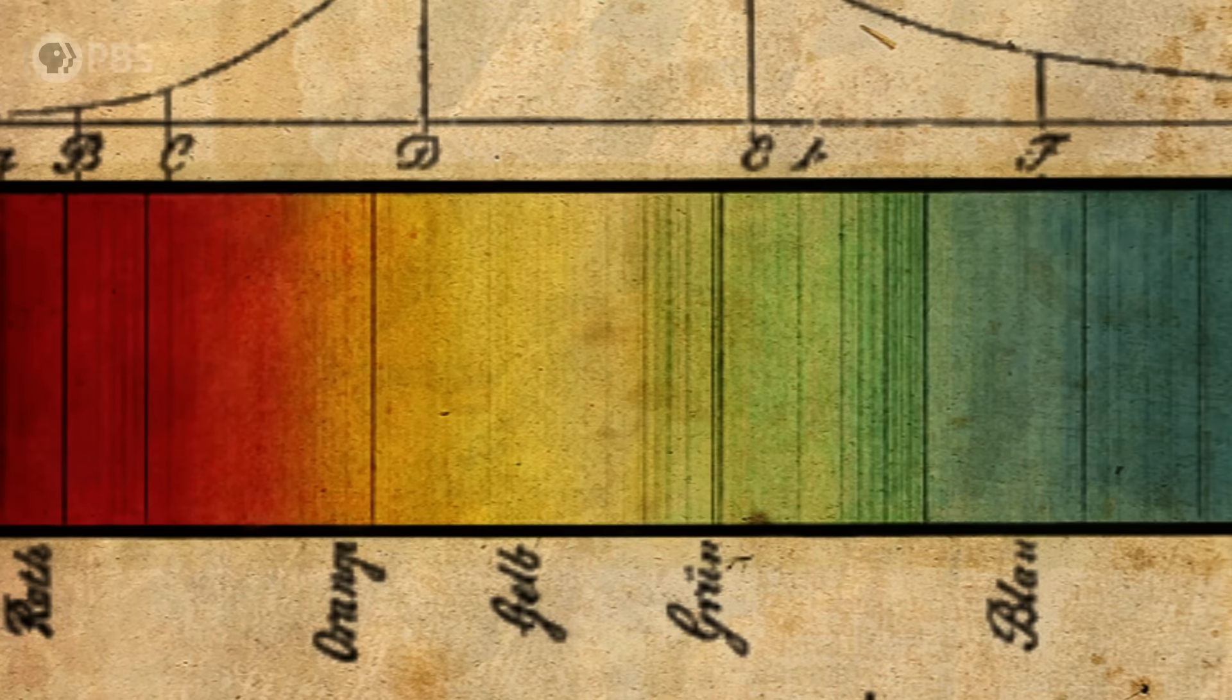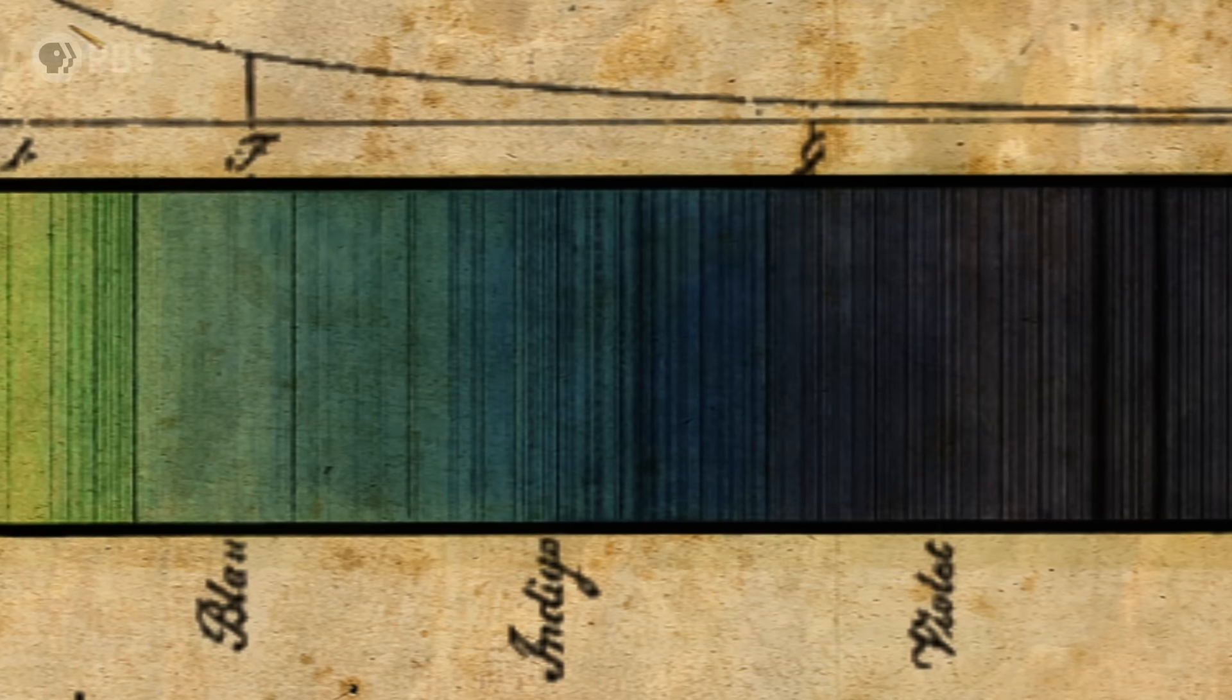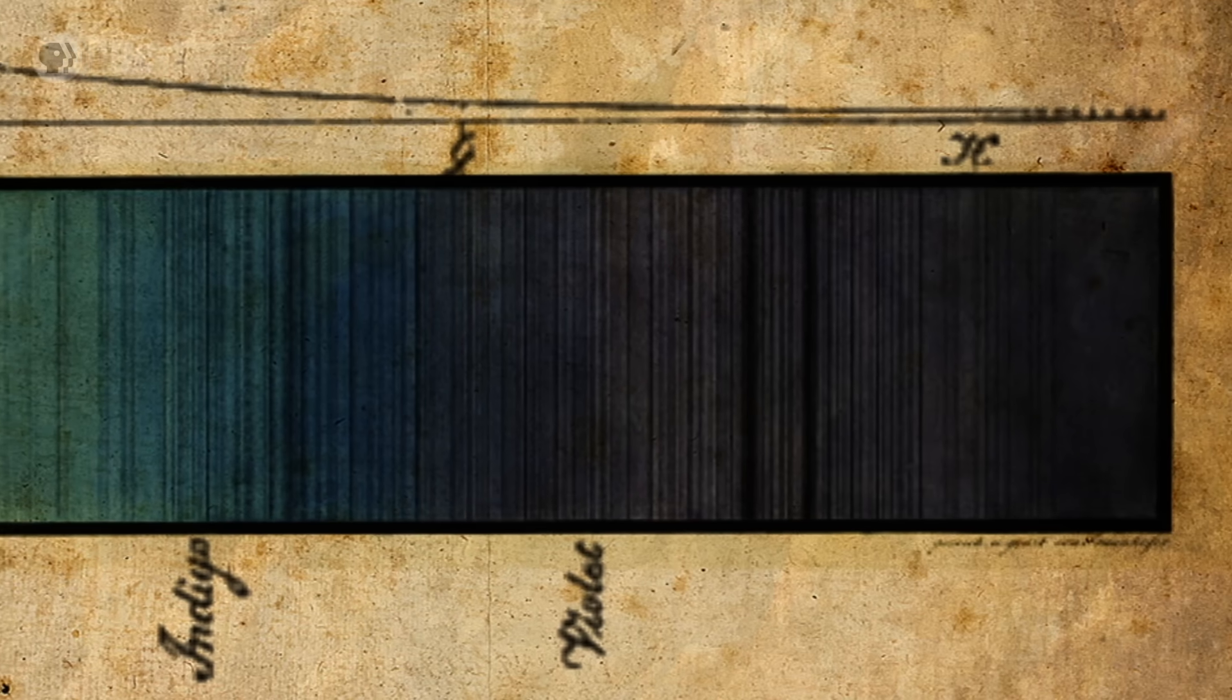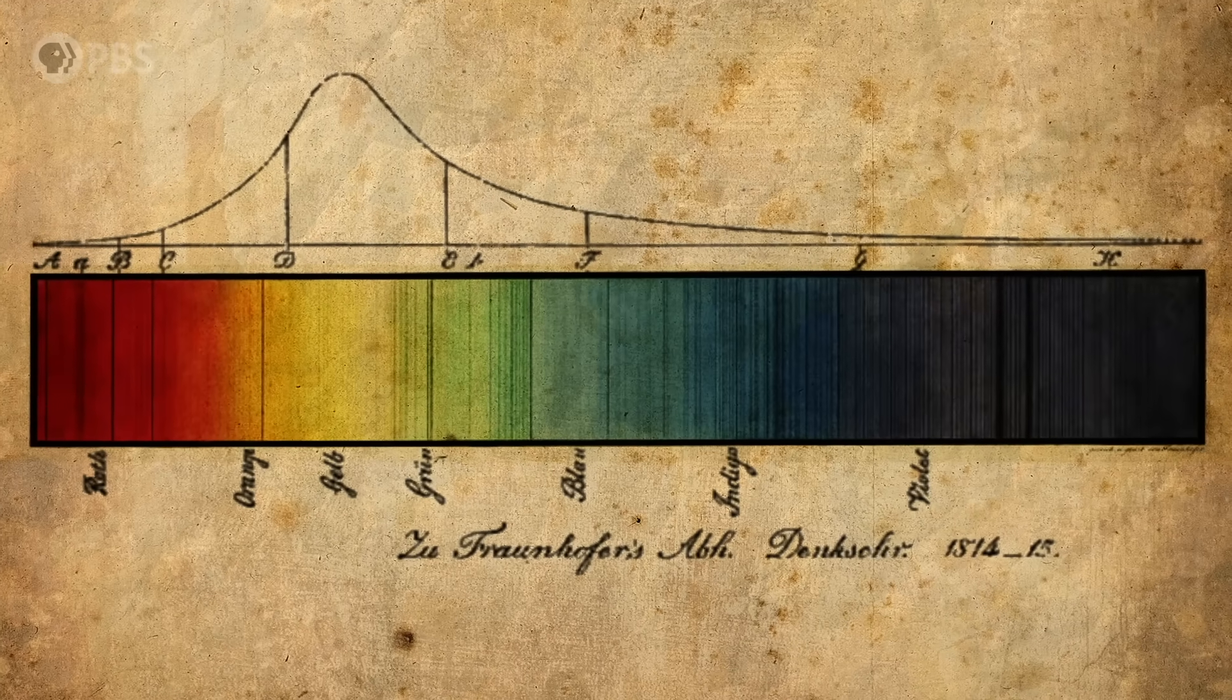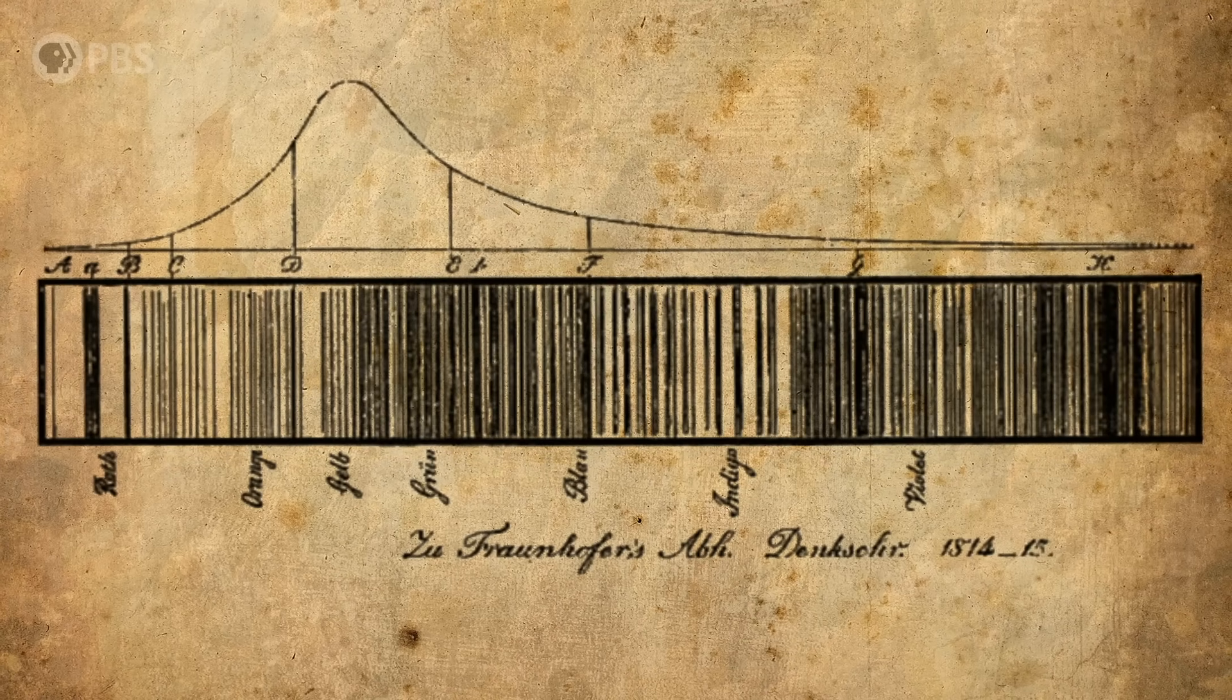Fraunhofer couldn't explain what he didn't see, but eventually he cataloged over 600 pieces missing from the rainbow. Some were dark, some were faint. They looked a lot like a barcode, and in a way, that's exactly what they were.